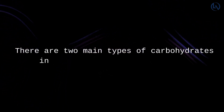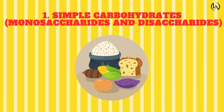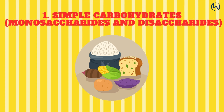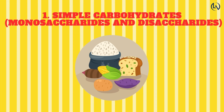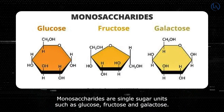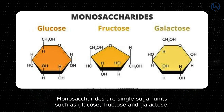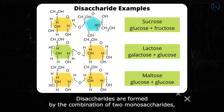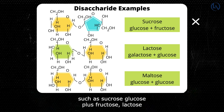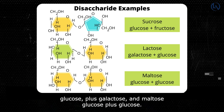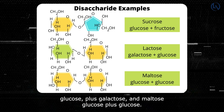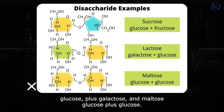There are two main types of carbohydrates involved in energy metabolism. Simple carbohydrates include monosaccharides and disaccharides. Monosaccharides are single sugar units, such as glucose, fructose, and galactose. Disaccharides are formed by the combination of two monosaccharides, such as sucrose (glucose plus fructose), lactose (glucose plus galactose), and maltose (glucose plus glucose).